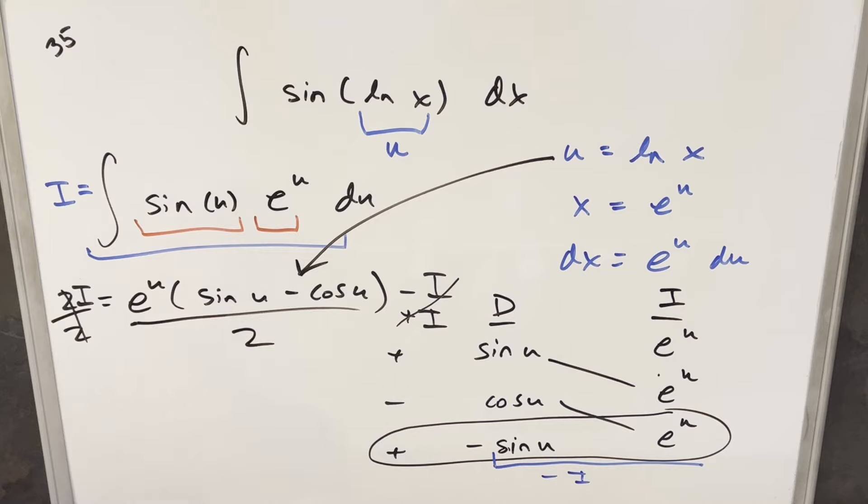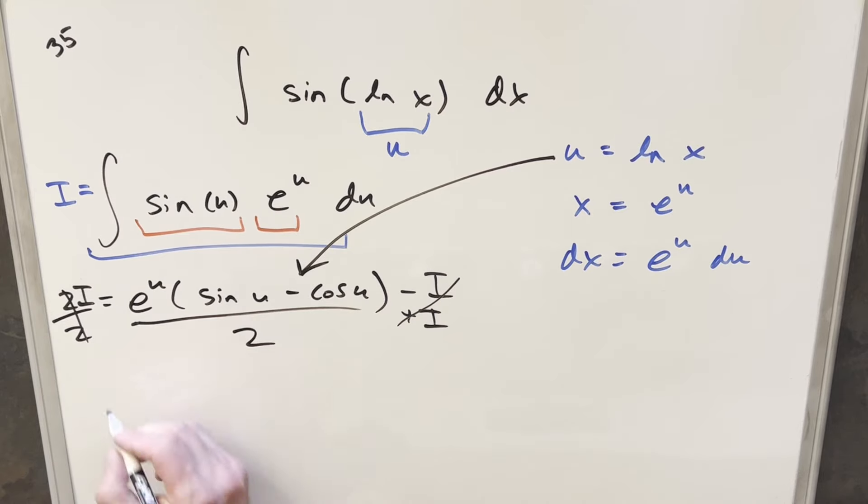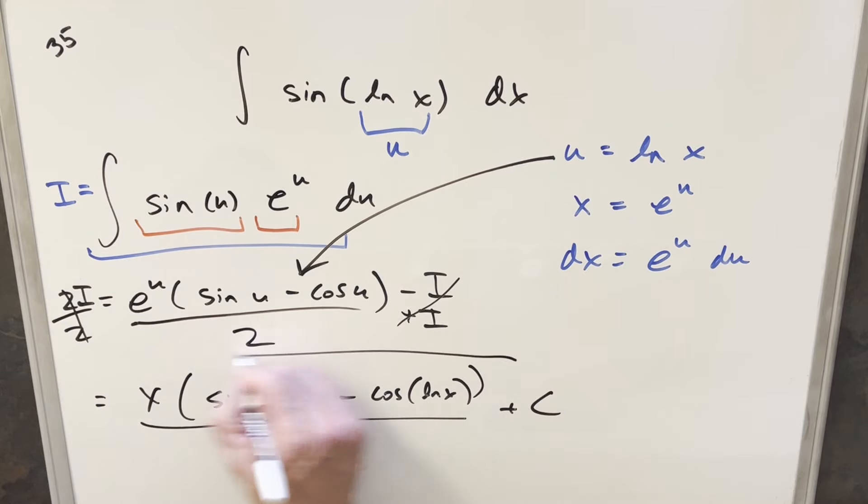Now we just need to back substitute to finish it off. Putting this all together, we already have our value for e to the u, that's just going to be x. We'll have x out front. This is going to become sine ln x minus cosine ln x all over 2, add a plus C, and that's it.